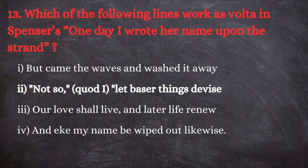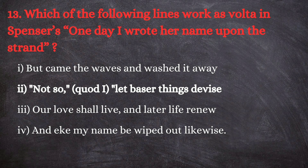Question number 13: which of the following lines works as the Volta in Spenser's 'One day I wrote her name upon the strand'? Options: first, 'But came the waves and washed it away'; second, 'Not so, quod I, let baser things devise'; third, 'Our love shall live and later life renew'; fourth, 'And eke my name be wiped out likewise.' The correct answer is the second — 'Not so, quod I, let baser things devise.' Volta is the turning point where the poem shifts from problem to solution. At the ninth line, the poem turns in a different direction when the lover counters the argument of the beloved.